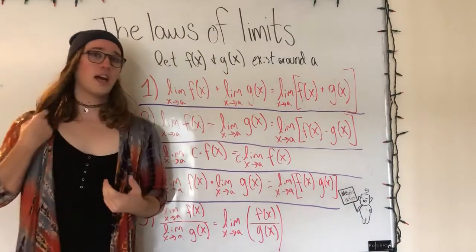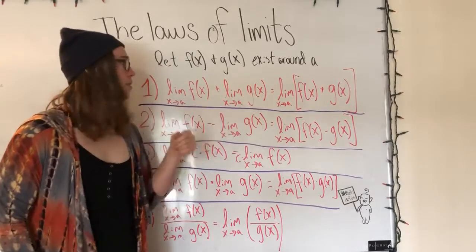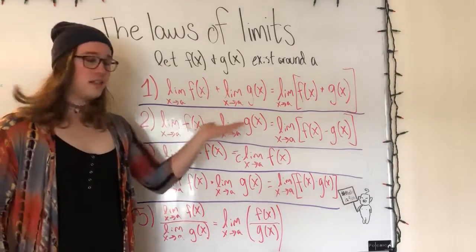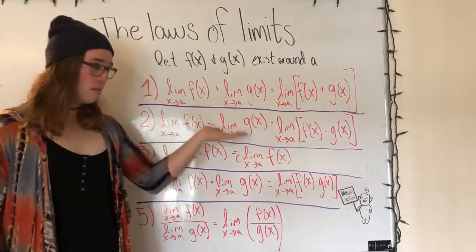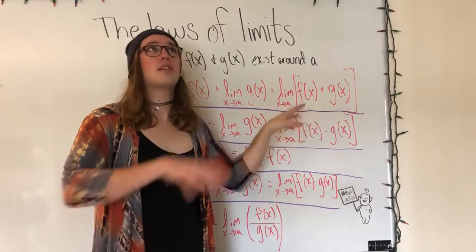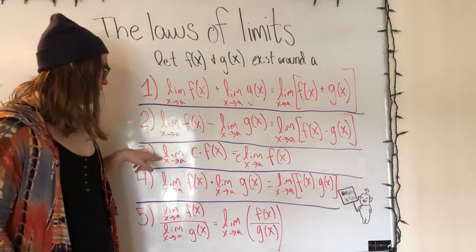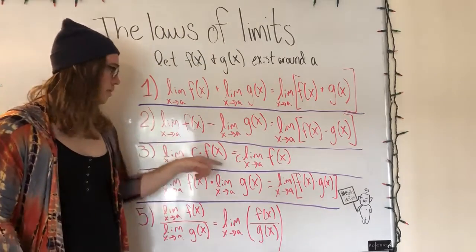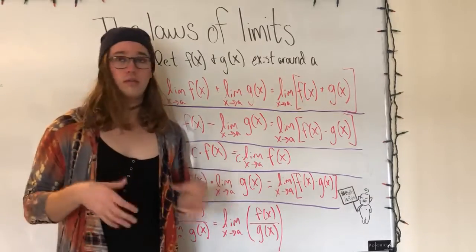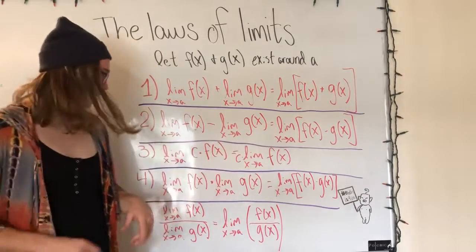We have that the sum of two limits is equal to the limit of the sums. The difference of two limits is the limit of the difference. And the limit as x approaches a of c times f of x is equal to c times the limit of that function, where c is any constant.